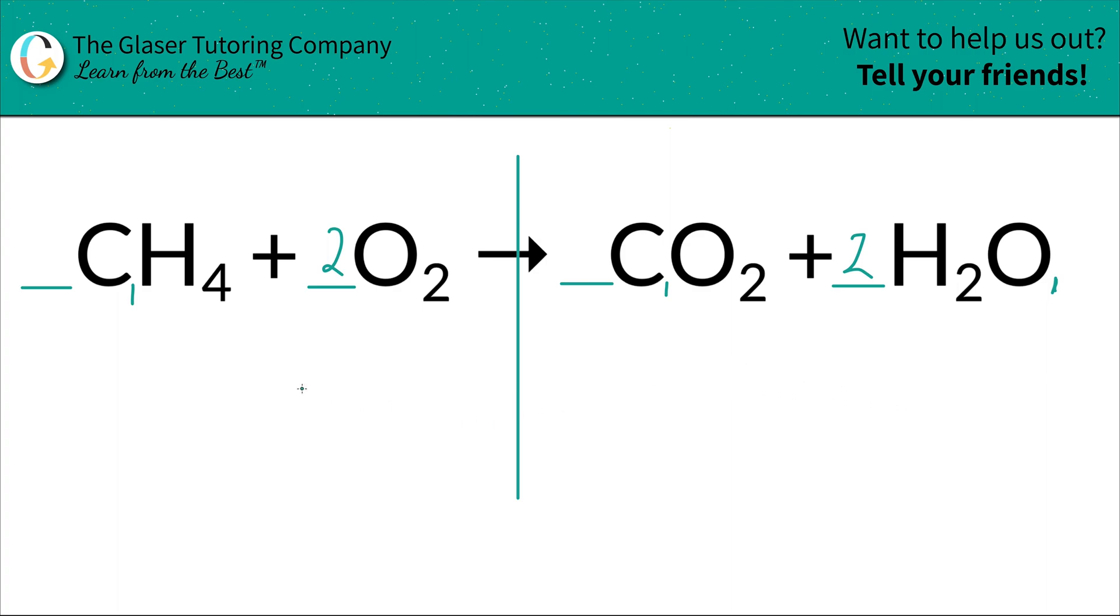Go back and check everything if you like. One carbon on the left, one carbon on the right, four hydrogen on the left, four hydrogen on the right, four oxygen on the left, and you have two oxygen here and two oxygen here. So that's a total of four. Done.